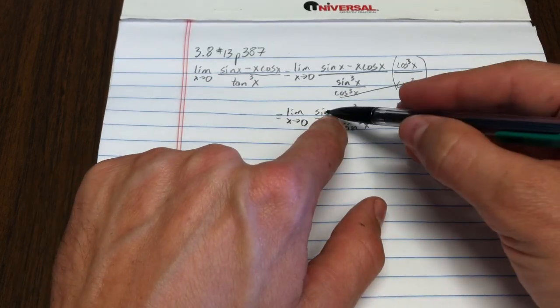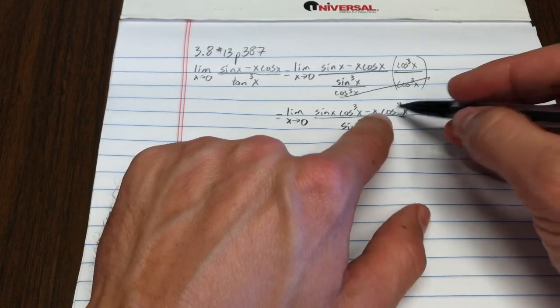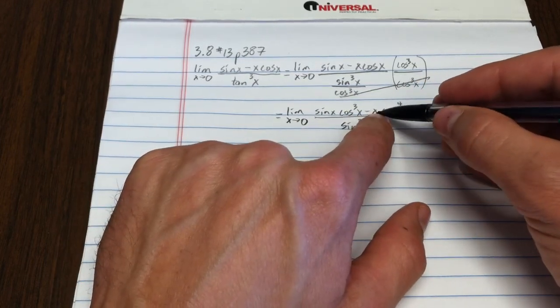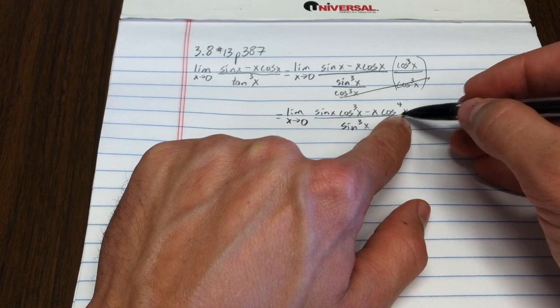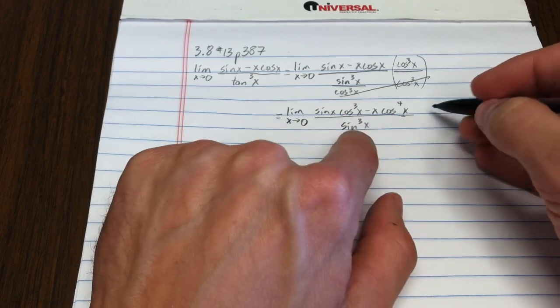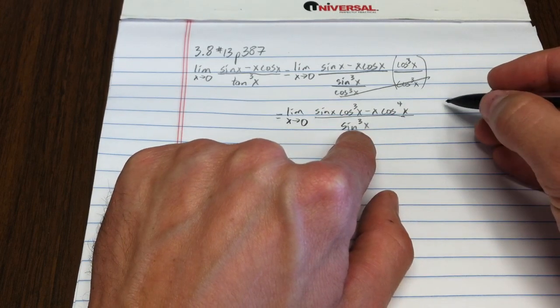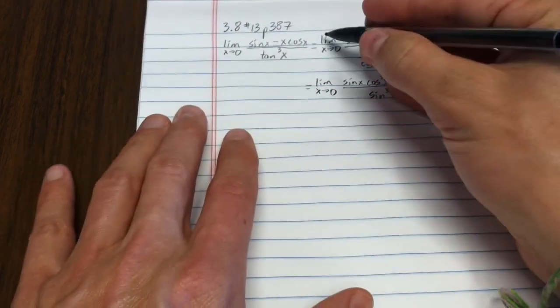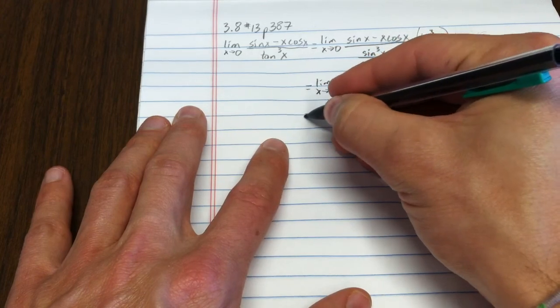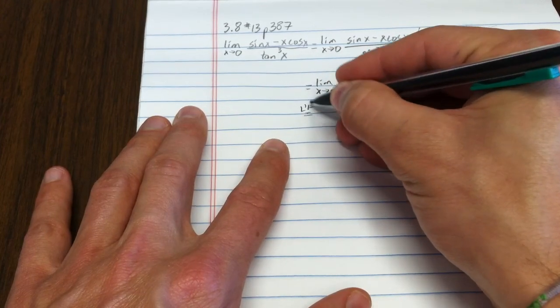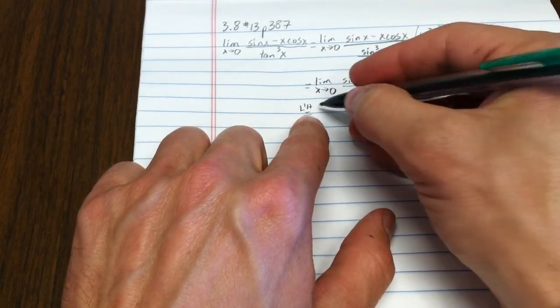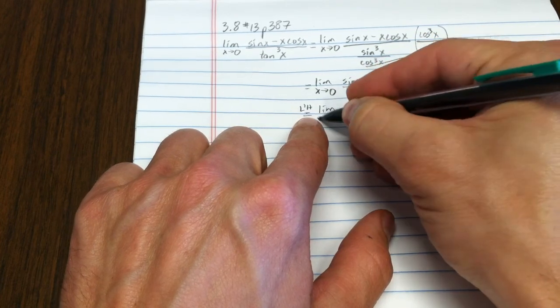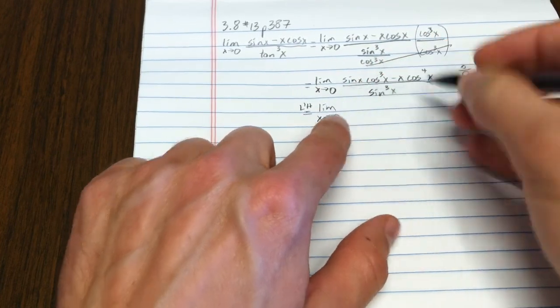As x goes to 0, sine of 0 is 0 times whatever minus 0 times something non-zero, so that's 0 in the numerator. Sine cubed of 0 is still 0, so we have 0 over 0. Now that was algebraic simplification. To indicate that I'm now taking the derivatives, I'll write a little LH for L'Hopital, and I will now take the derivative of the numerator.